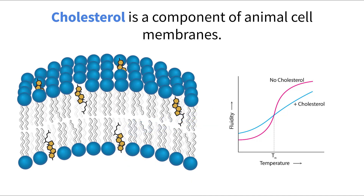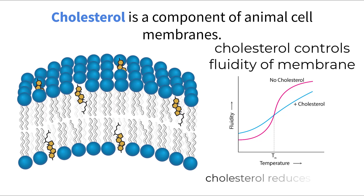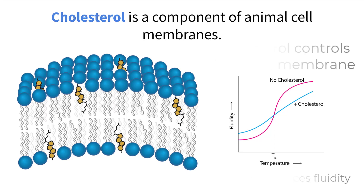One of the main functions of cholesterol is to control the fluidity of the cell membrane. Phospholipids and proteins found within the cell membrane are constantly in motion, and if the environment heats up, that motion is increased and can become unstable. Cholesterol molecules within the membrane act as a stabilizing component that reduces the fluidity, meaning the phospholipids will not be able to move around as much. So even if the system heats up, cholesterol helps hold it together, preventing it from completely breaking down.